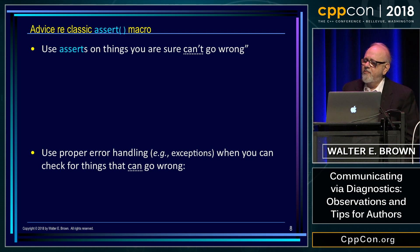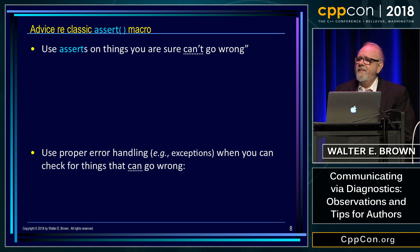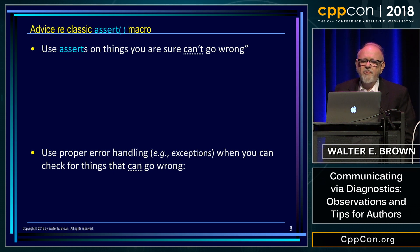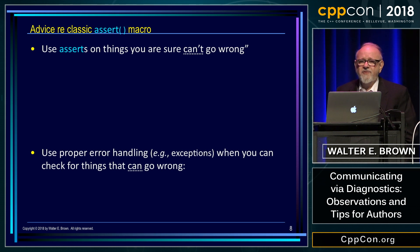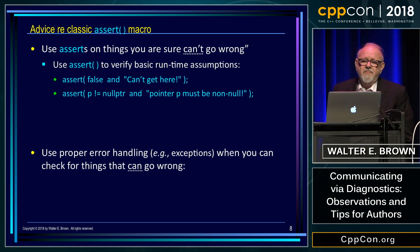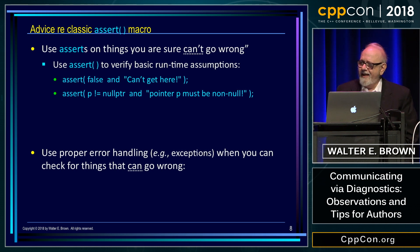A lot of programmers still rely on the classical assert macro that we inherited from C. But newbies really don't know how to use it well. Usually there are two guidelines: use asserts when you're sure that something can't go wrong, and then proper error handling — for some people that's exceptions — when you can check for things that can go wrong. So basic runtime assumptions are good candidates for asserts.